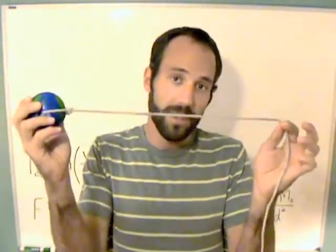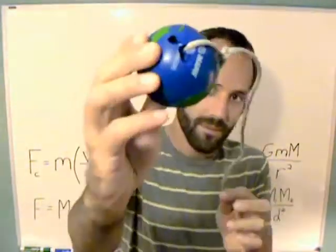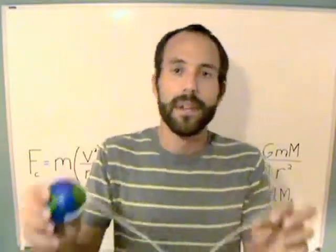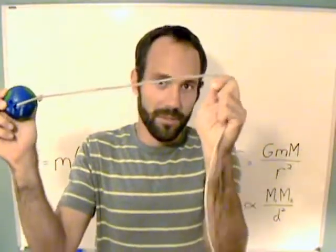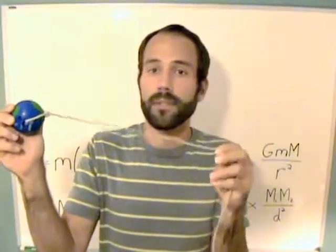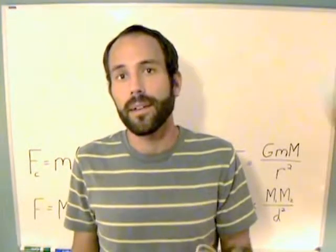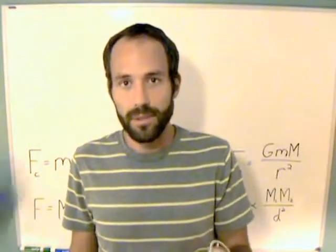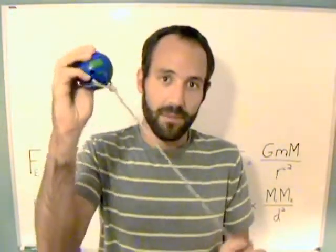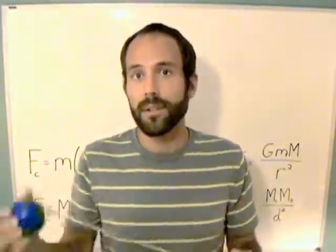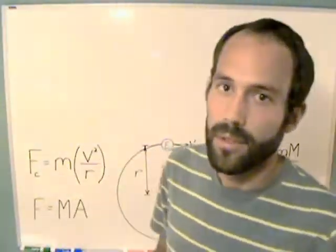A ball on a string is the best way to give an example of this. You have a ball — a little foam spherical Earth — and a string representing the force pulling it towards the center, which in this case is my hand, where you could say that was the Sun. You spin this around, and the tension in the string is the force. That creates a velocity — the ball resists that force by traveling in a circle around the center point, or the Sun, in the case of the solar system model.